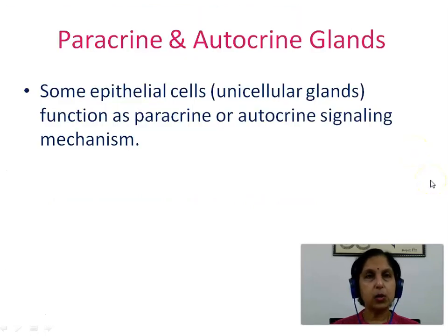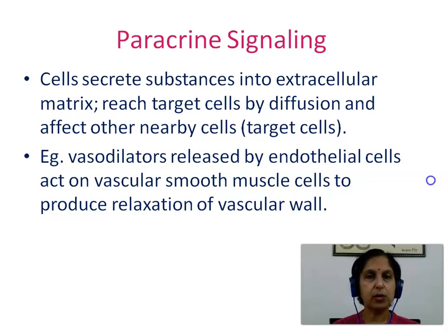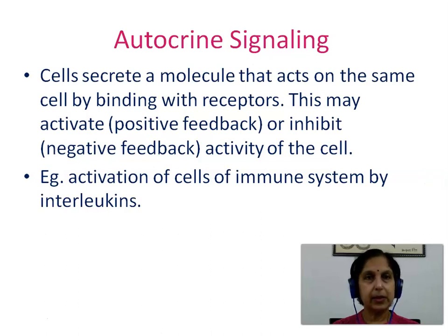Some epithelial cells function as unicellular glands through paracrine or autocrine signaling. In paracrine signaling, cells secrete substances into the extracellular matrix, which reach and affect nearby target cells by diffusion — example: vasodilators released by endothelial cells act on vascular smooth muscle cells to produce relaxation of the vascular wall. In autocrine signaling, cells secrete a molecule that acts on the same cell by binding with receptors, producing either a positive or negative feedback — example: activation of immune system cells by interleukins.